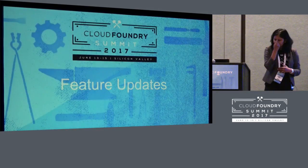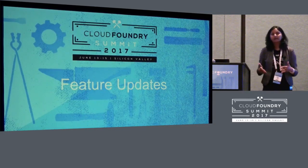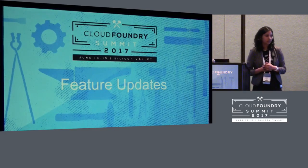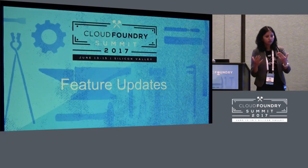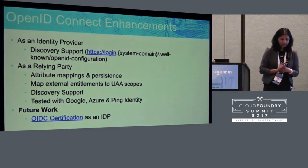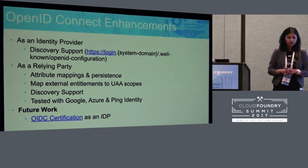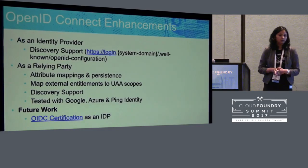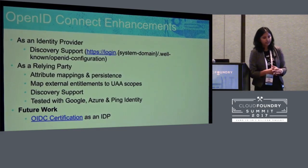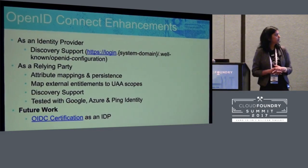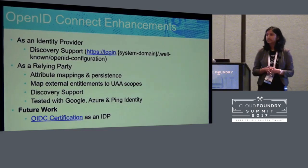Let's get into the feature updates. Some of these things were added to the product a long time back, but we haven't done a lot of blogging around some of the core features, so I'm going to take this opportunity to present the latest feature updates. Starting off with OpenID Connect enhancements — UAA is an OpenID Connect identity provider, similar to how Google supports single sign-on. It supports the OpenID Connect identity provider profile, as does Azure, and now so does UAA. This was added some time back.